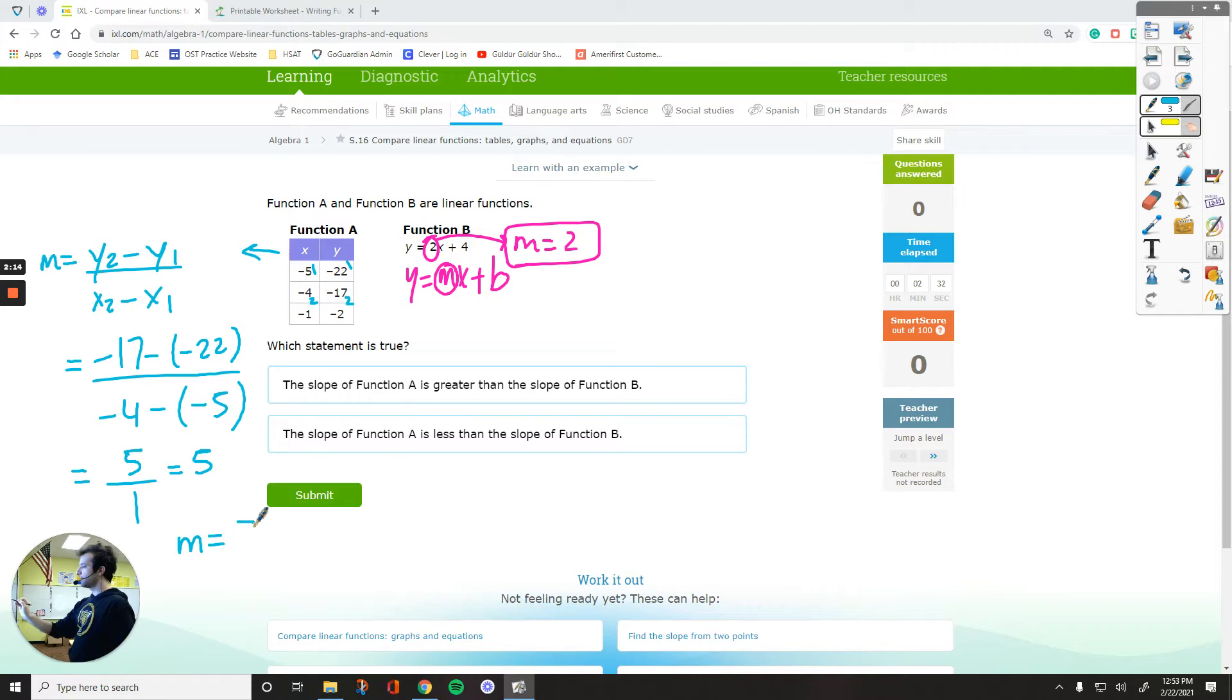Basically, for function a, the slope equals 5. For function b, the slope was positive 2. For function 1, the first function, it is 5. So this one has a greater slope. Function a has a greater slope than function b.